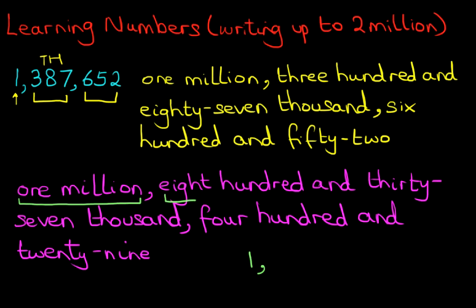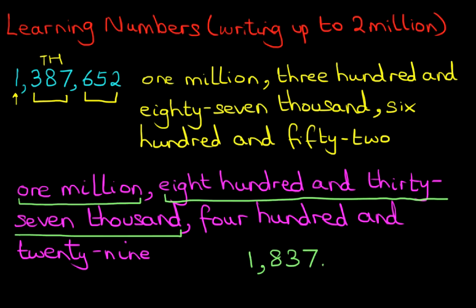The next step is we have this 837,000. So it's all of that. 837,000. Another comma. And we've got 429.